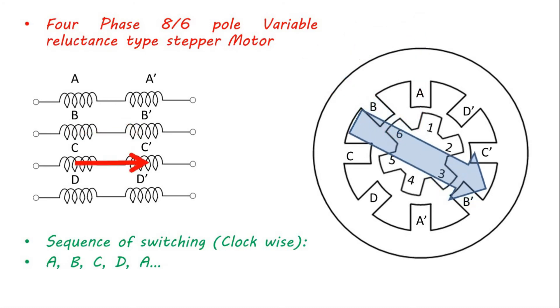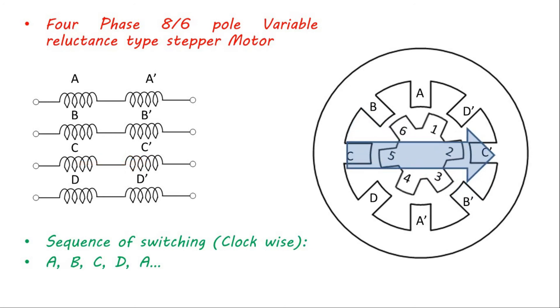Rotor pole 5 and 2 will align themselves to this stator mmf, and as a result rotor travels another 15 degrees in clockwise direction.